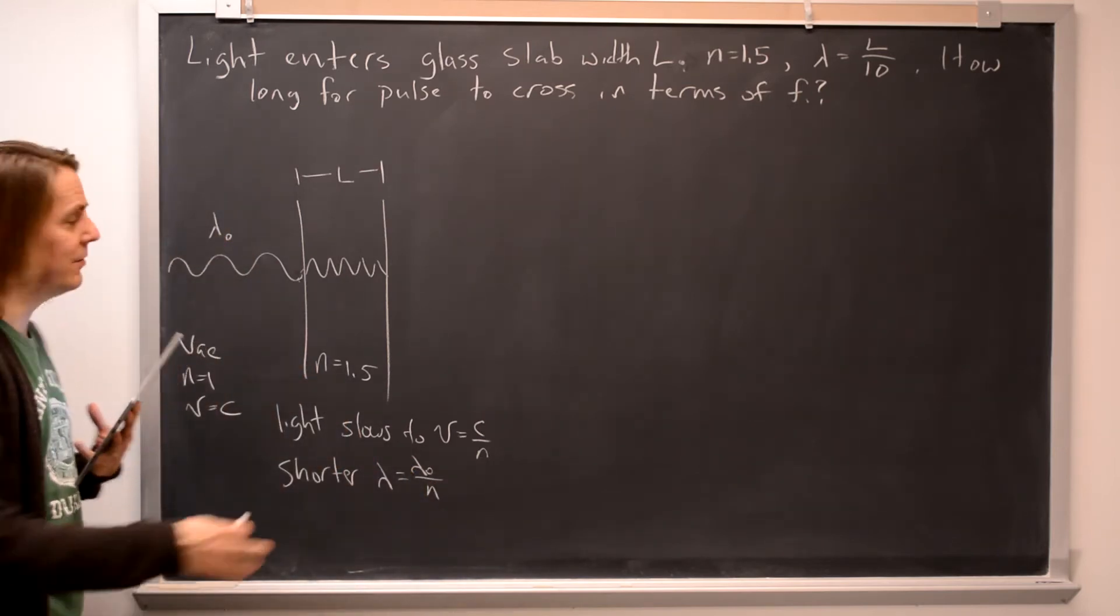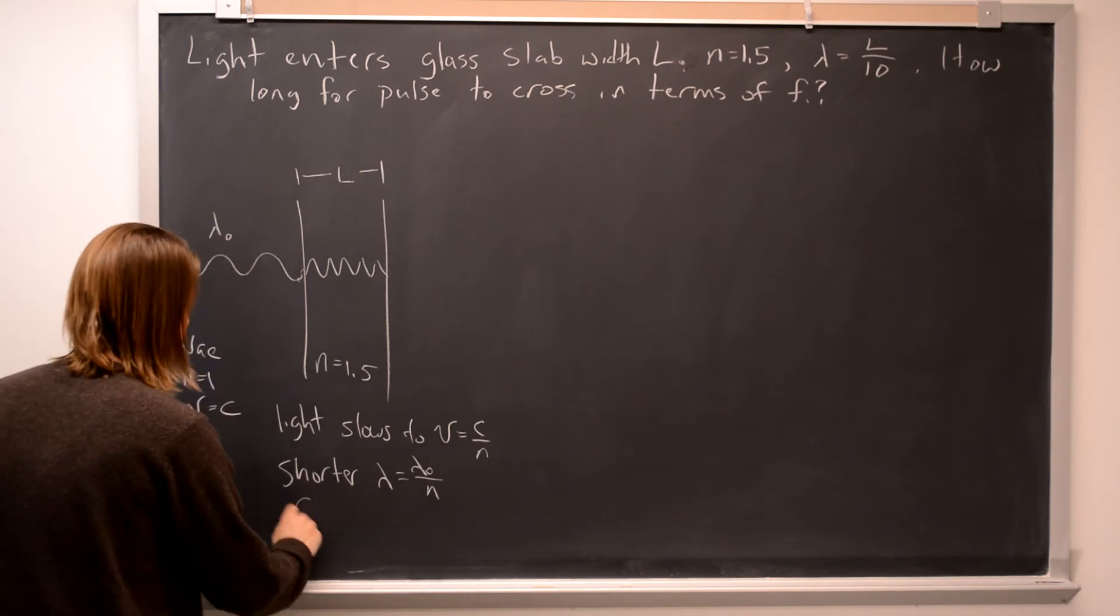So the wavelength gets shorter, you divide by the 1.5, and the frequency stays the same.